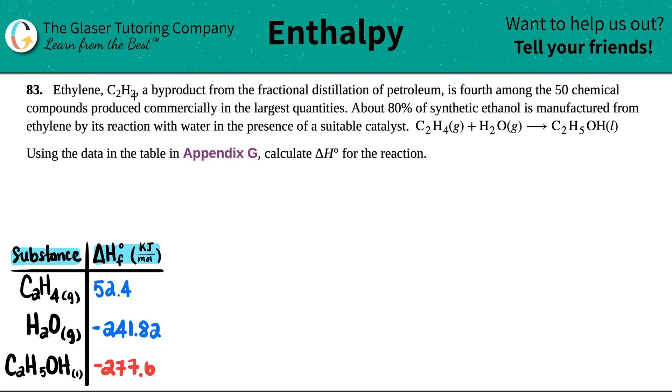Okay, so we just have to find the delta H. We got this, right? I'm just going to rewrite this. Notice C2H4, which is a gas, plus H2O, which is a gas, yields C2H5OH, and that's a liquid.